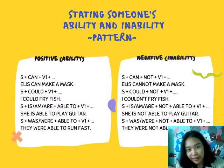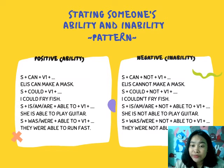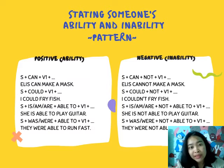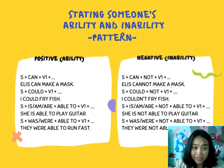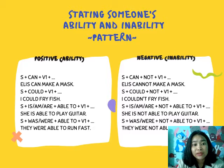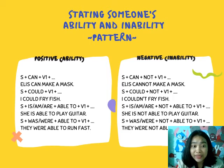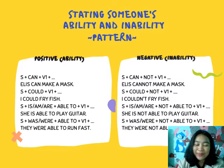Let's take a look at the pattern. If you want to state someone's capability or ability, we can use positive patterns. The first: subject + can + verb 1. The second: subject + could + verb 1. The third: subject + is/am/are + able to + verb 1. And the last: subject + was/were + able to + verb 1.